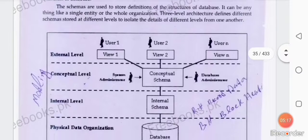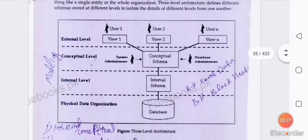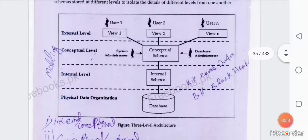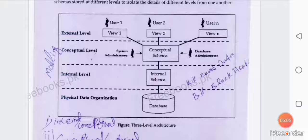The three-level architecture was designed so that we can easily understand and build its structure. It includes the external level, conceptual level, internal level, and the physical data organization. In the figure, the external level has user 1, user 2, user N — so many users with their own views and perspectives. After external level comes conceptual level, then internal level, and then the database — the corporate database where we store our data.